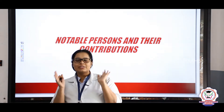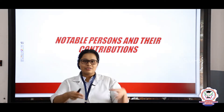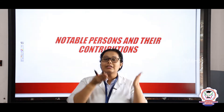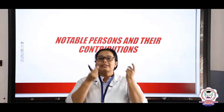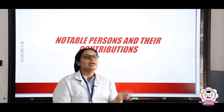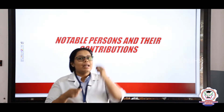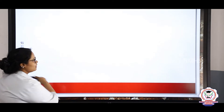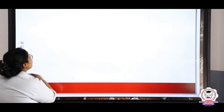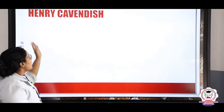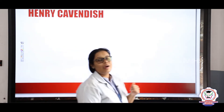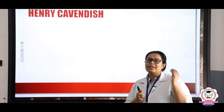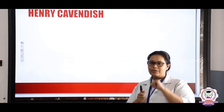We have discussed how chemistry has evolved. We should know the important people because chemistry is getting better and better each time. The first person we are going to discuss is Henry Cavendish, who was a main person behind the development of chemistry.